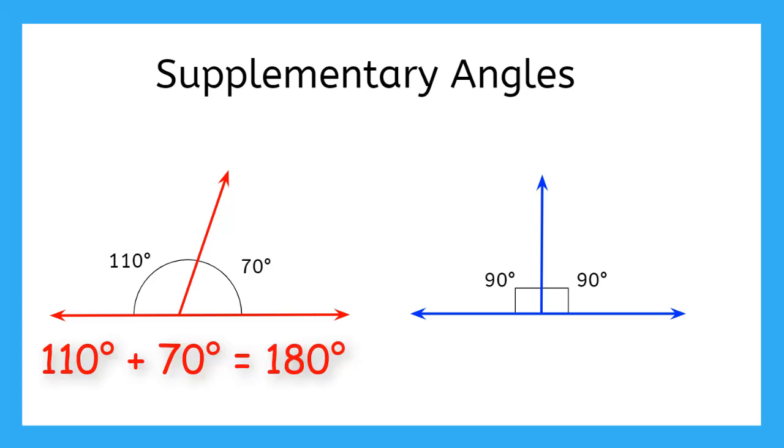The blue angle is made up of two angles. Both are 90 degrees. When these are added together, it's 180 degrees. And notice that both of these angles form straight lines.